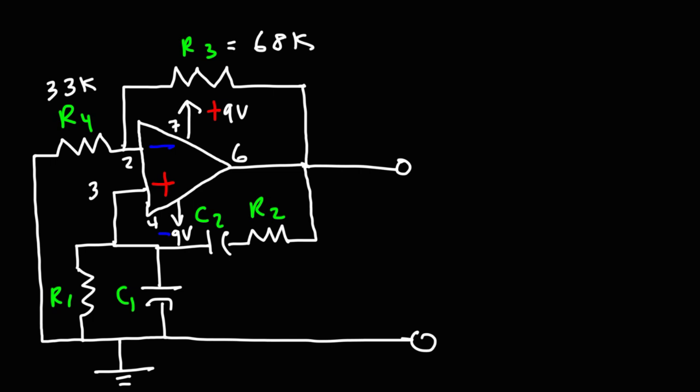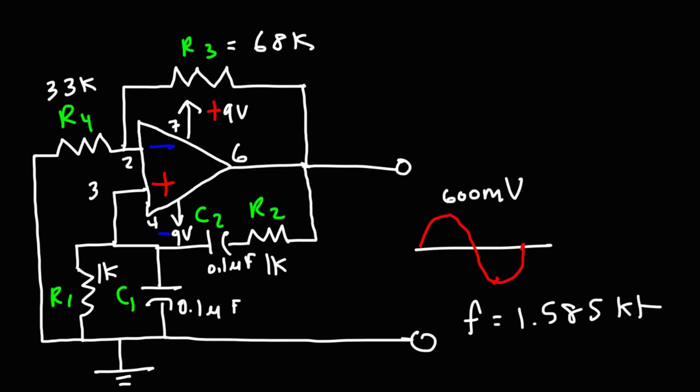So R1 and R2, I set it to 1K. I used two 1K resistors for those two values. And for C1 and C2, I used a 0.1 microfarad capacitor. And for this particular circuit, I got a nice sine wave with a peak voltage of around 600 millivolts. The measured frequency that I got was 1.585 kilohertz, which is actually pretty close to the theoretical frequency.